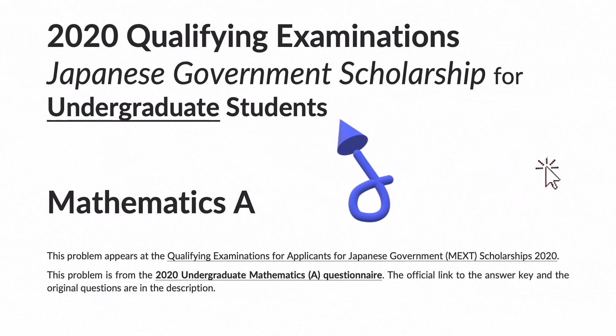This problem appears at the Qualifying Examinations for Applicants for Japanese Government MEXT Scholarships 2020. This problem is from the 2020 Undergraduate Mathematics A questionnaire. The official link to the answer key and the original questions are in the description.